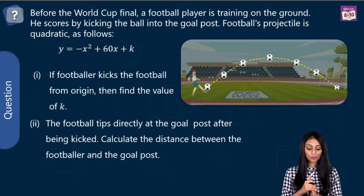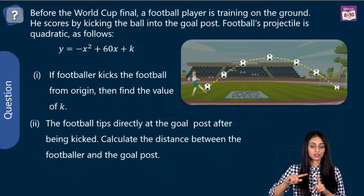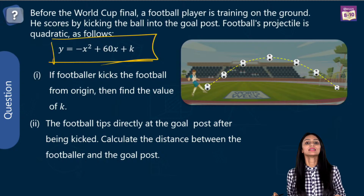Before the World Cup final, a football player is training on the ground. He scores by kicking the ball into the goal post. The football's projectile is quadratic. When the player kicks the ball, it follows a parabolic path — a U-shaped graph. It is given by the equation: Y equals minus X squared plus 60X plus K.